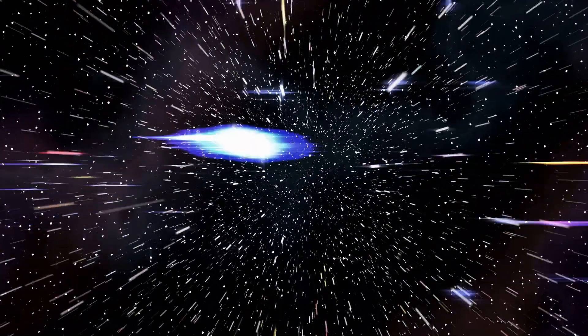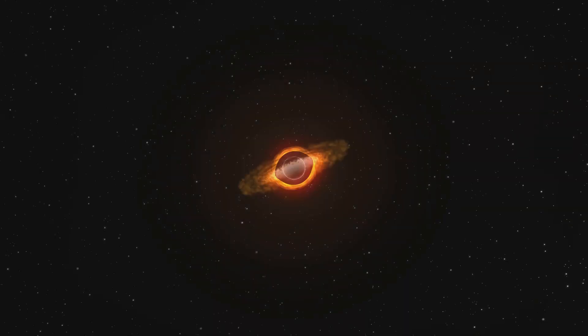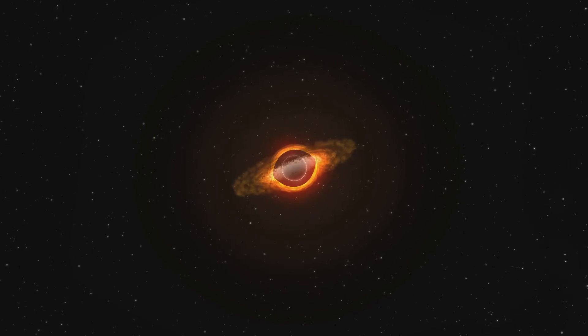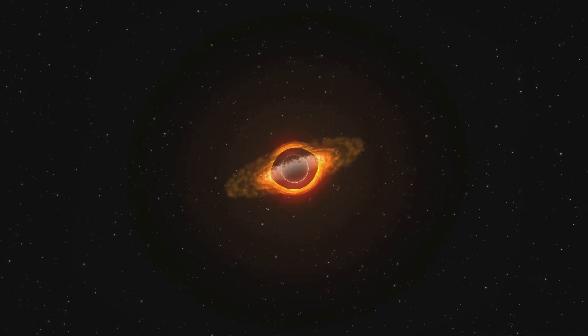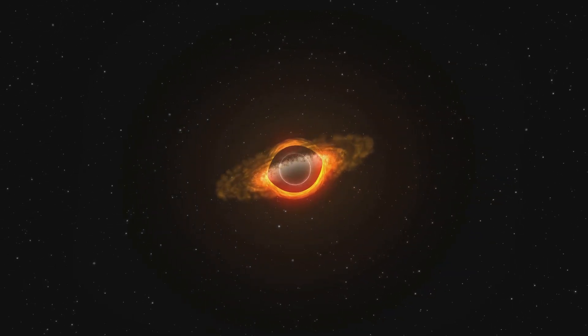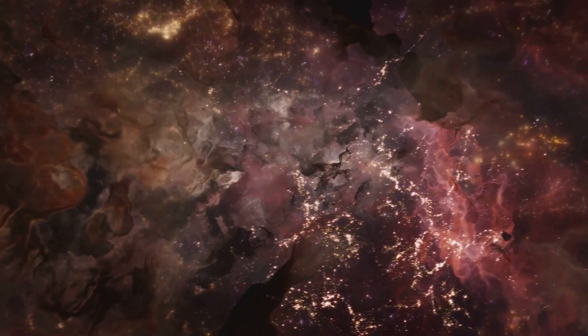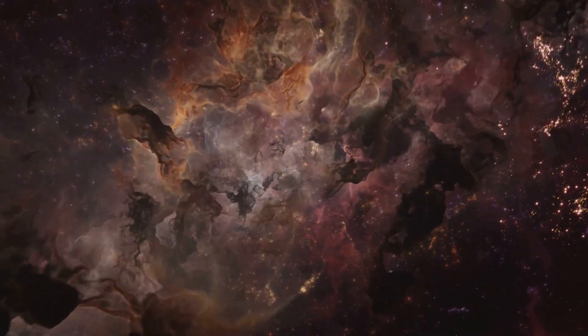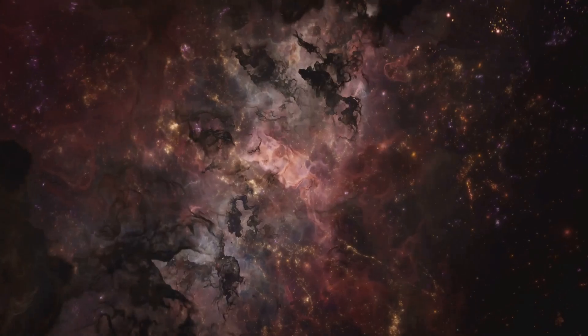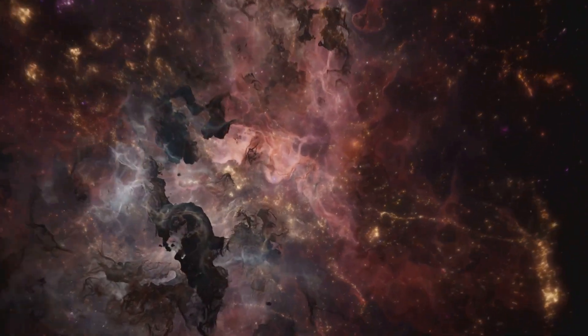Number 5, hypervelocity stars. These are stars on the run, ejected from their galaxies at speeds exceeding a million miles per hour. They're thought to be flung out by close encounters with supermassive black holes, like a cosmic slingshot gone wild. One such star, US 708, is travelling so fast that it will eventually escape the Milky Way's gravitational pull.